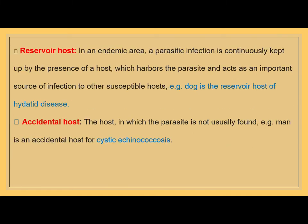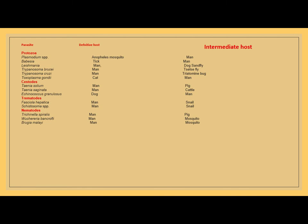Reservoir host: in an endemic area, a parasitic infection is continuously maintained by the presence of a host which harbors the parasites and acts as an important source of infection to other immunocompromised hosts. The dog is the reservoir host of hydatid disease. The accidental host is the host in which the parasite is not usually found — man is an accidental host of cystic echinococcosis. Examples are given: for Plasmodium, the definitive host is Anopheles mosquito and intermediate host is man; for Babesia, the intermediate host is man and the definitive is tick.